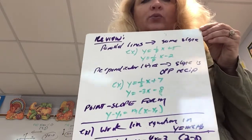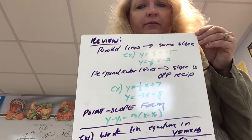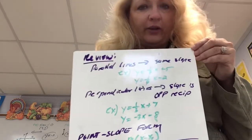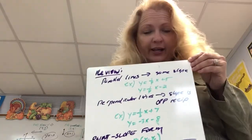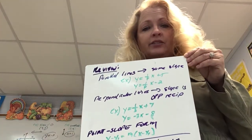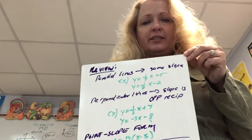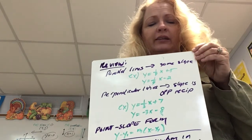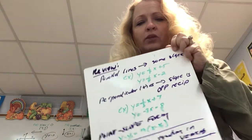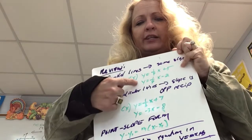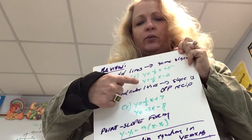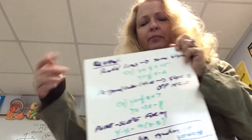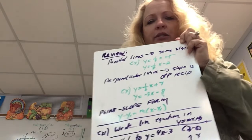Let's review slope relationships of parallel lines. Parallel lines do not intersect, so they are tilted the same amount, therefore parallel lines have the same slope. I wrote two examples of two equations that would be parallel if we graphed them — they both have the same slope.